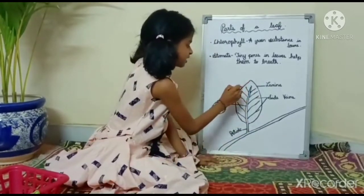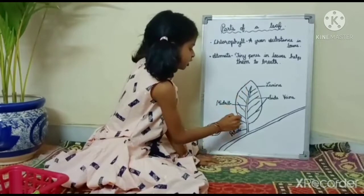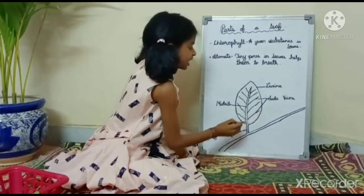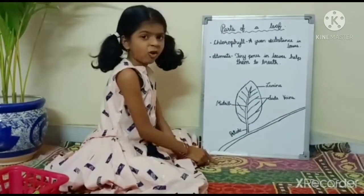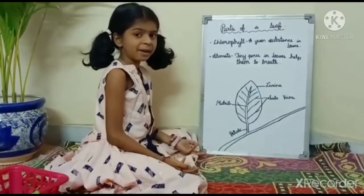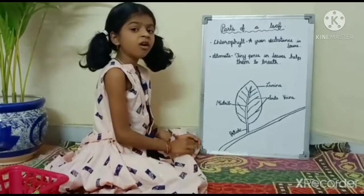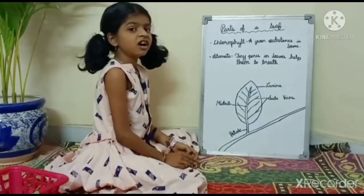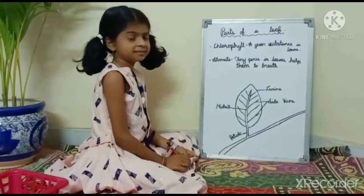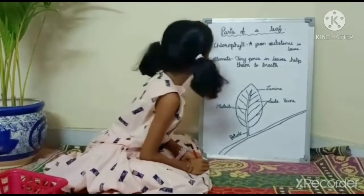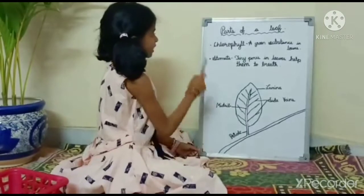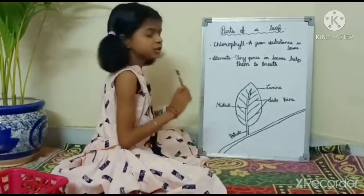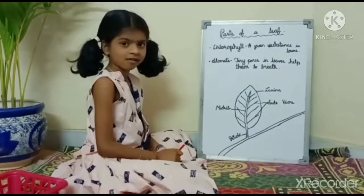This is the boundary of a leaf. The boundary of a leaf is called a lamina or a leaf blade. This is the midrib.